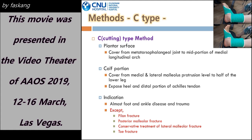The heel-open cast was performed in two methods: C-type and K-type. C-type completely exposes the heel posteriorly to expose the Achilles tendon attachment part of the calcaneus and the calcaneus posterior superior aspect. The bottom of the foot is wrapped from the metatarsophalangeal joint to the medial arch, and the lower leg is wrapped from the middle one-third to half of the lower leg. The foot heel and distal side of the Achilles tendon are fully exposed. A slight motion on the calcaneus provides comfort during walking, but there is a risk of posterior dislocation of the foot. Therefore, C-type does not apply in cases of pilum fracture, posterior malleolar fracture where posterior stability is important, or lateral malleolar fracture treated conservatively.